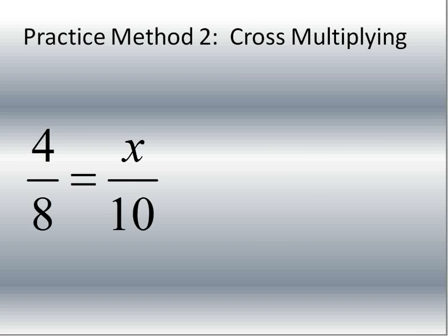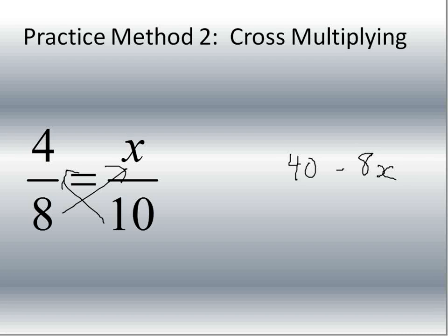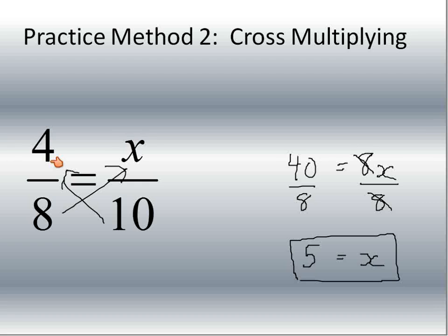Let's do another one using cross-multiplying. This is a perfect example of one where you'd use cross-multiplying because you can't say 'what happened to eight that made it into 10?' Eight times two is 16, eight times one is eight — division wouldn't work cleanly either. So we use cross-multiplying: eight times x is 8x, and ten times four is 40. Divide both sides by eight. These cancel out, and 40 divided by eight is five. So x is equal to five. You could have noticed four over eight is one-half and five over ten is also one-half, but cross-multiplying lets us solve it systematically.